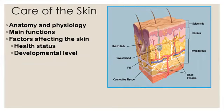Care of the skin: the integumentary system consists of the skin, subcutaneous layer, hair, nails, and sweat and sebaceous glands. The skin has two distinct layers: the epidermis — the thicker outer layer composed of stratified squamous epithelial tissue made of keratinized or dead cells, making skin waterproof — and the dermis, the thinner second layer containing blood and lymphatic vessels, nerves, hair follicles, and sebaceous and sweat glands.